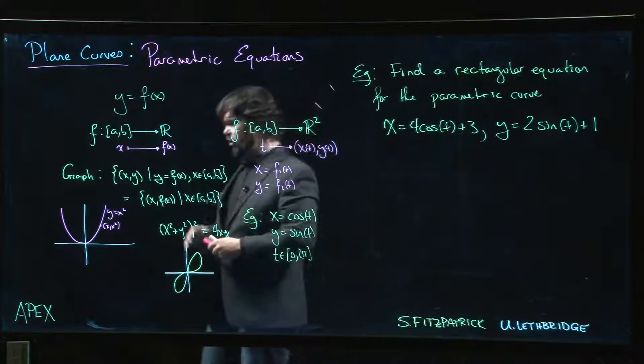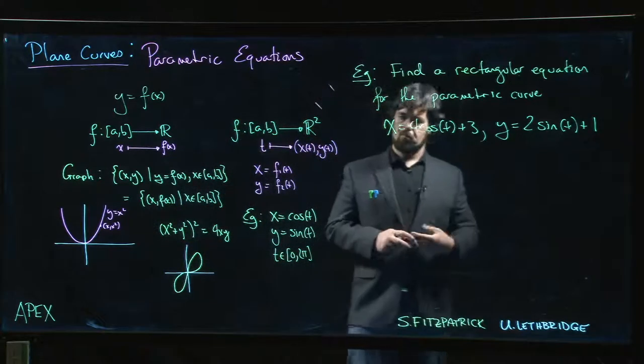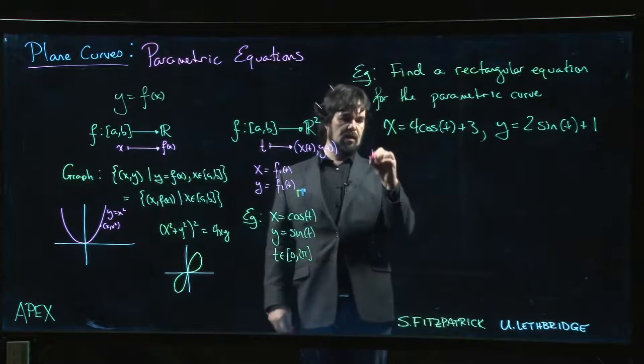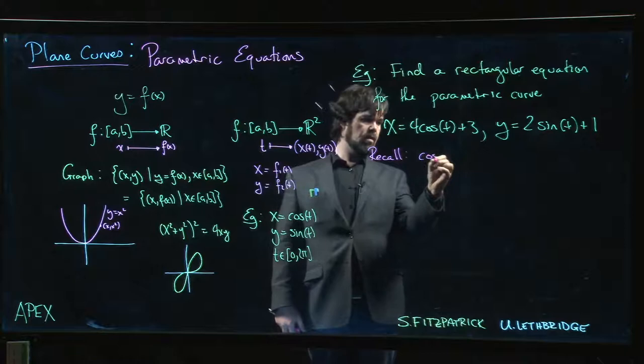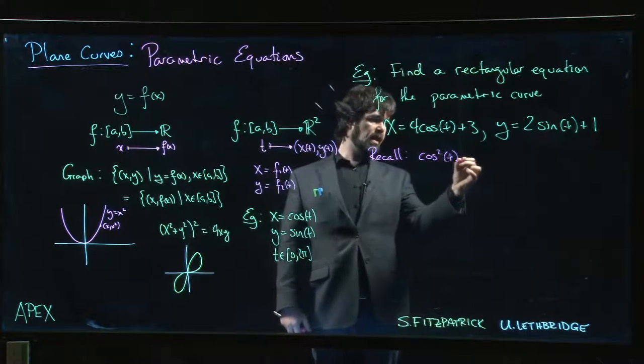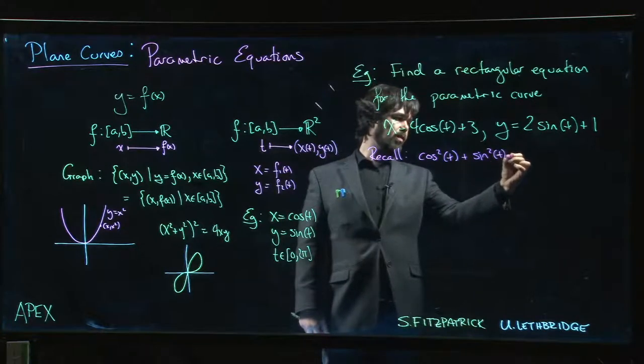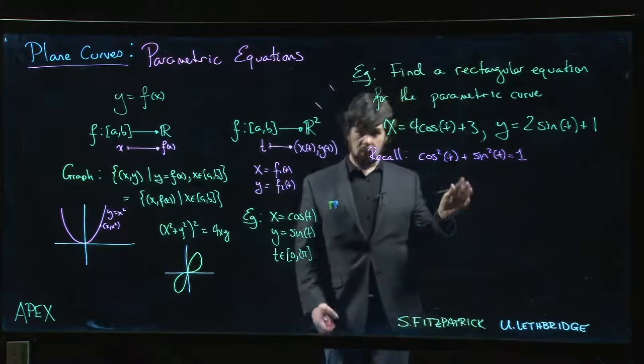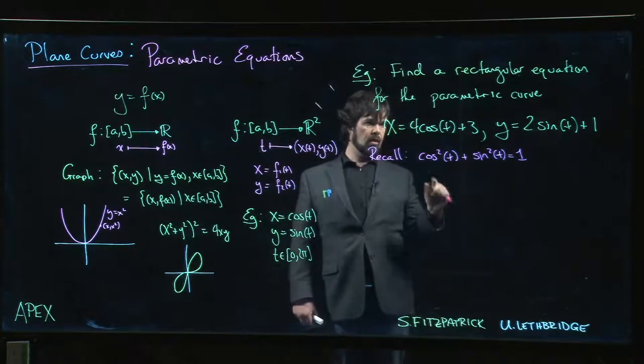What we might want to make use of here is to remind ourselves that we always have identities to fall back on. Of course, we have this very fundamental Pythagorean identity: cos²t + sin²t = 1. So maybe, rather than trying to solve for t, solve this for cos t and that for sin t. That's actually pretty straightforward.